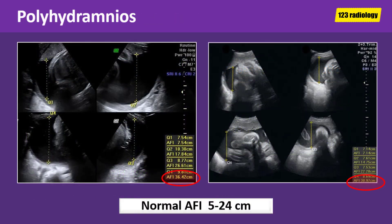These are two cases of polyhydramnios. On the case on the right side of the screen, the amniotic fluid index is 36.4 centimeters. On the other case, the amniotic fluid index is about 30.9 centimeters. The normal amniotic fluid index is between 5 to 24 centimeters.